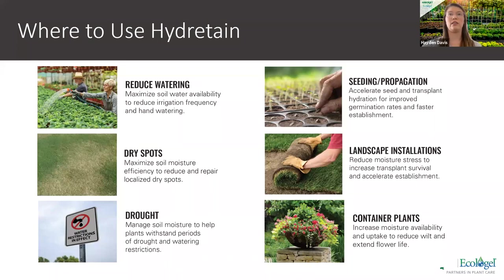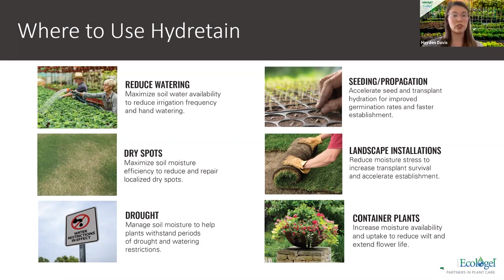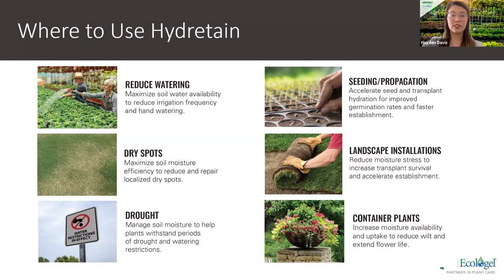Where can you use Hydrotain? You can use it about anywhere you need water management or a better water manager — even when you want to reduce watering. We see great results with reducing watering and you get the same or even better results with your plants. It helps minimize dry spot problems, maximize soil moisture efficiency, and assist with drought. We've been having some pretty harsh summers, especially out in the desert regions. It also helps with seeding and propagation for better seeding success, landscape installations, and reducing transplant stress on grass and sod.